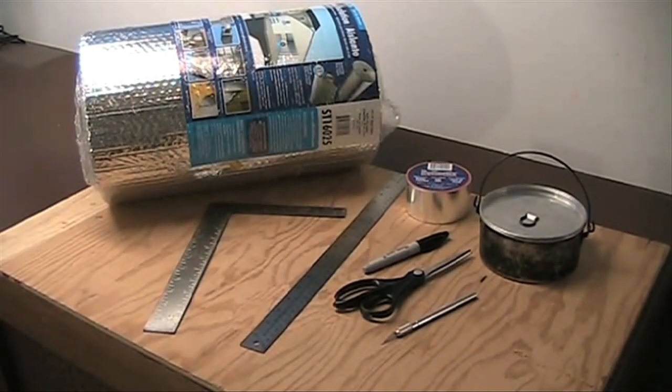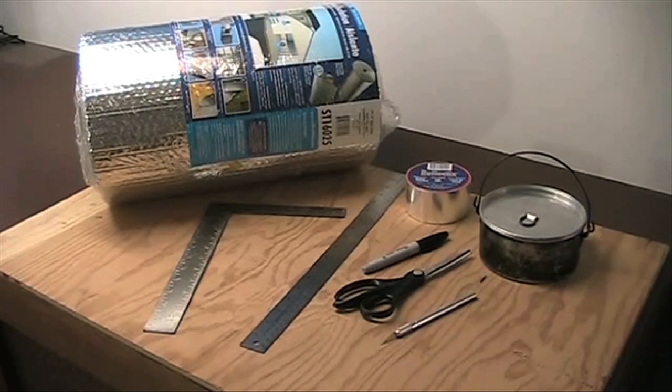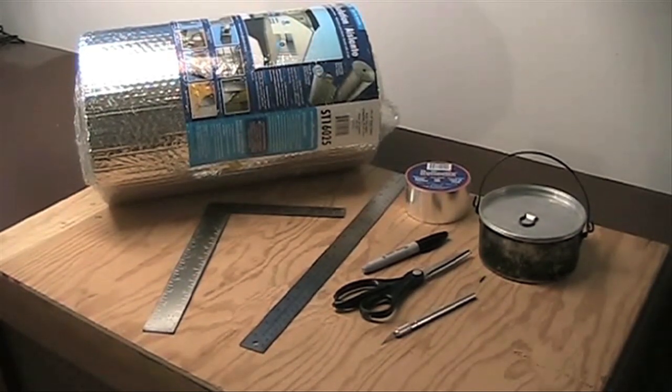Here's what you need to make it. Some Reflectix insulation. This is 16 inches by 25 feet for about $13.50 that I got at Lowe's.